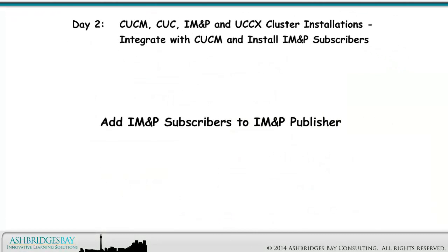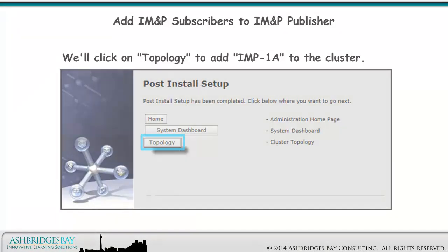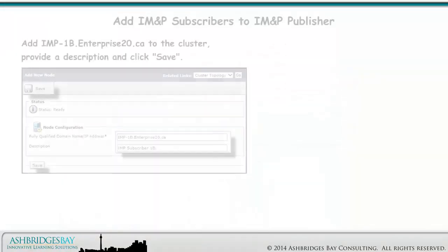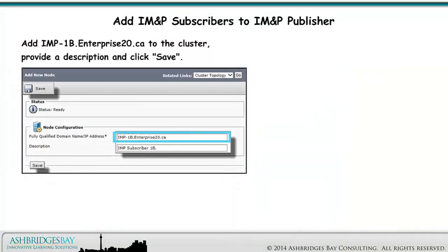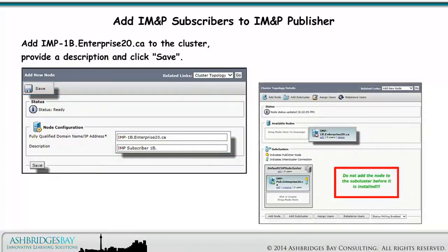Next, we add the subscribers to the IM&P cluster publisher. We'll click on Topology to add IMP1A to the cluster. Navigate to System > Cluster Topology > Add Node. Add IMP1B.Enterprise20.ca to the cluster, provide a description, and click Save. Do not add the node to the subcluster before you install it.